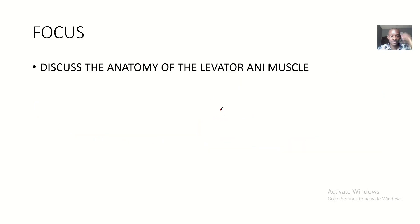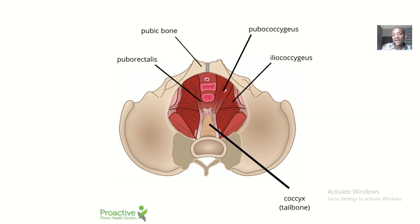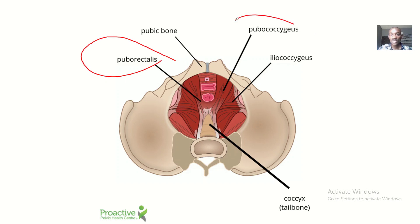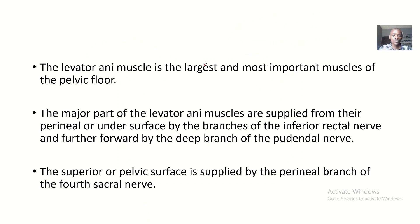Our focus is to discuss the anatomy of the levator ani muscle. Using the mnemonic 'PPI', we have the puborectalis, the pubococcygeus, and the iliococcygeus. The levator ani muscle is the largest and most important muscle of the pelvic floor.